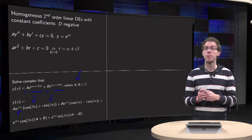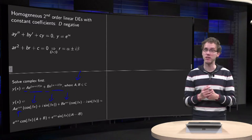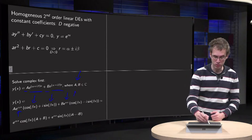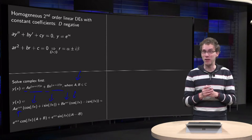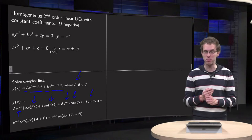You get, again, e^(αx). But now e^(-iβx). So it gives you cos(-βx), which equals cos(βx), plus i·sin(-βx). You can take out the minus sign to get -i·sin(βx).